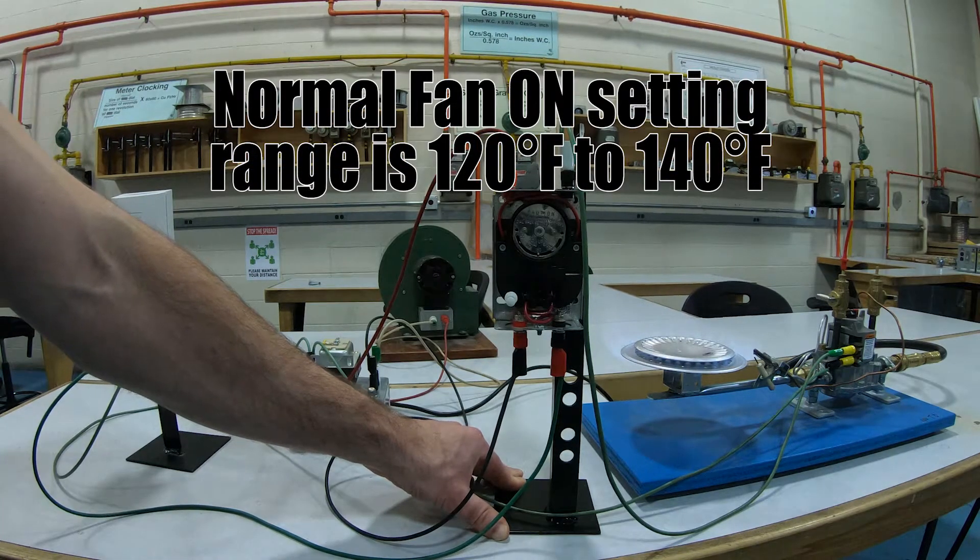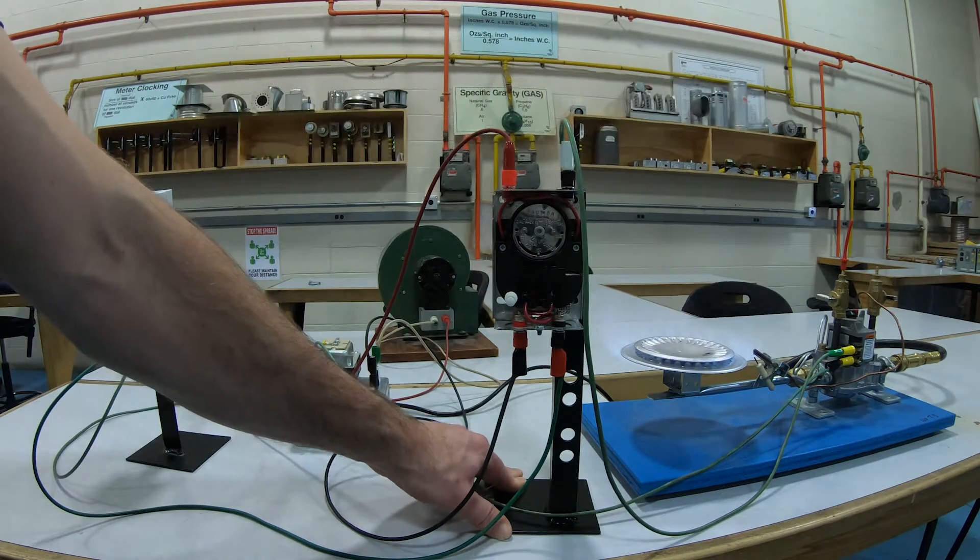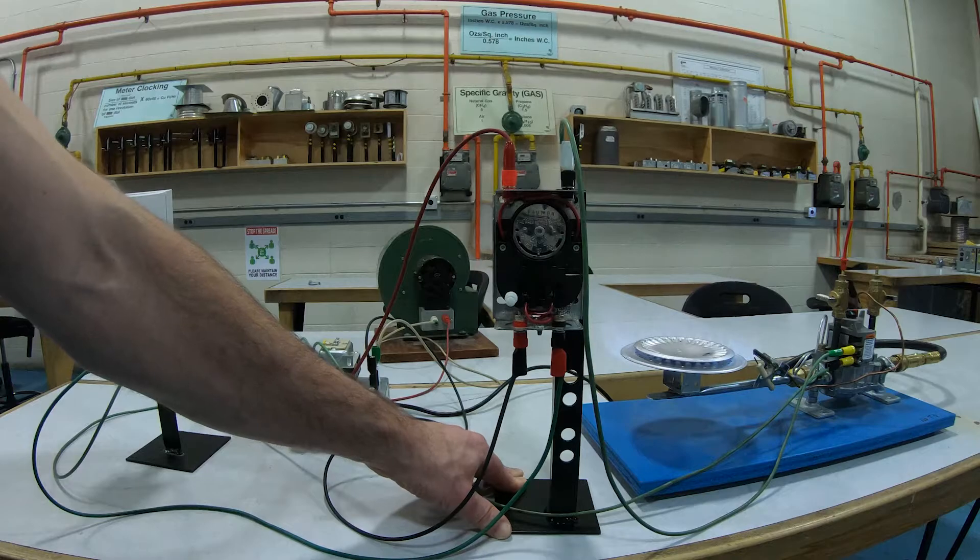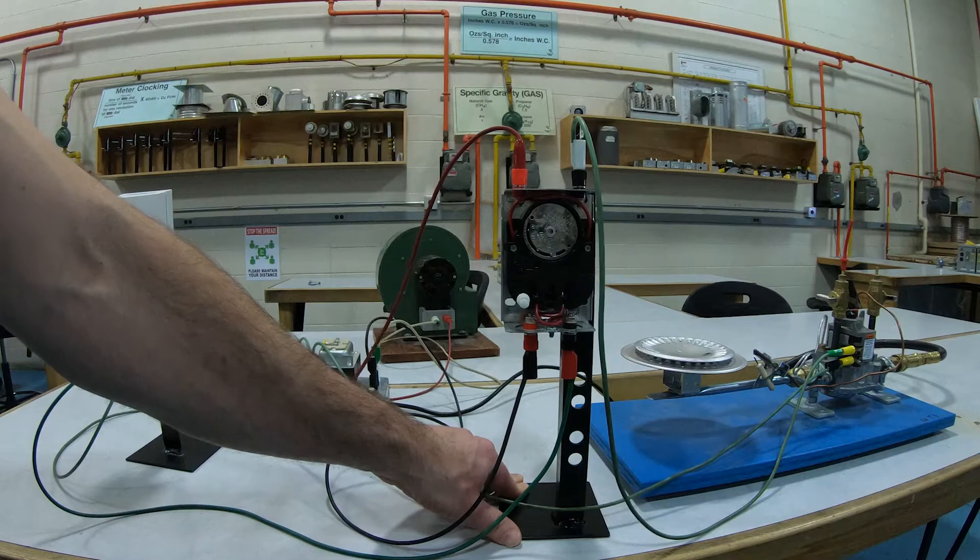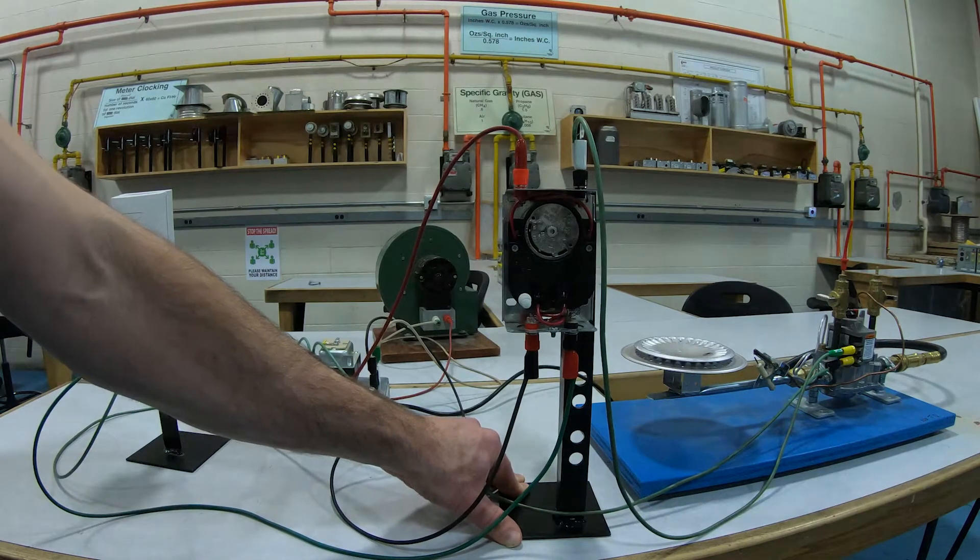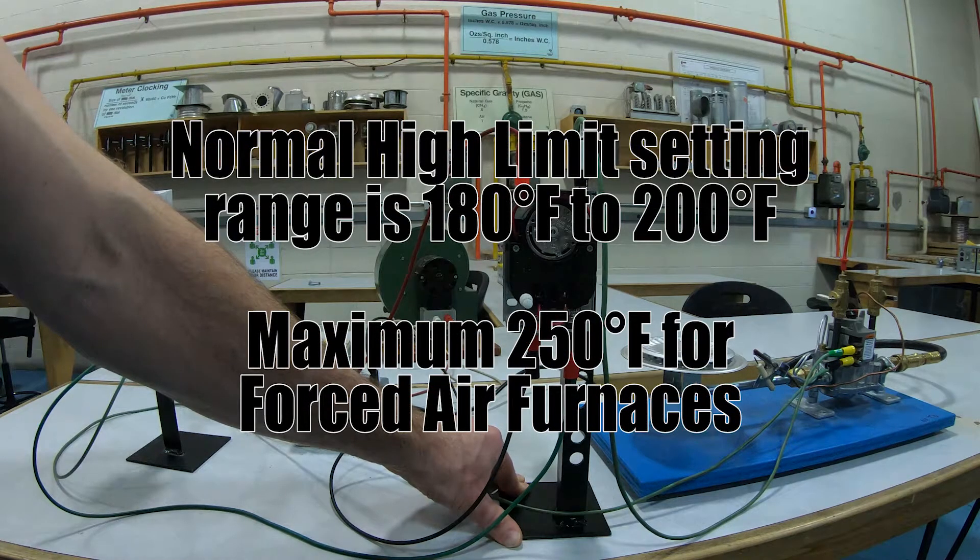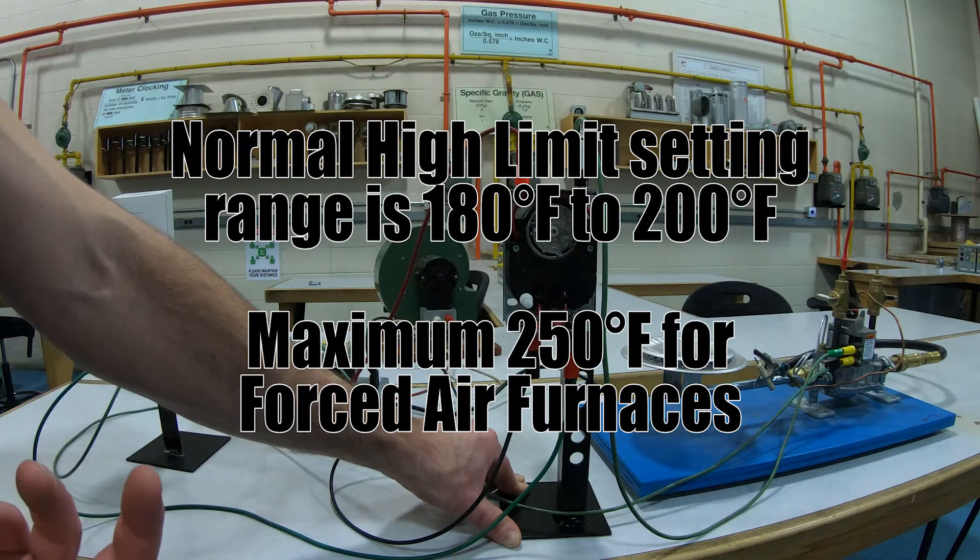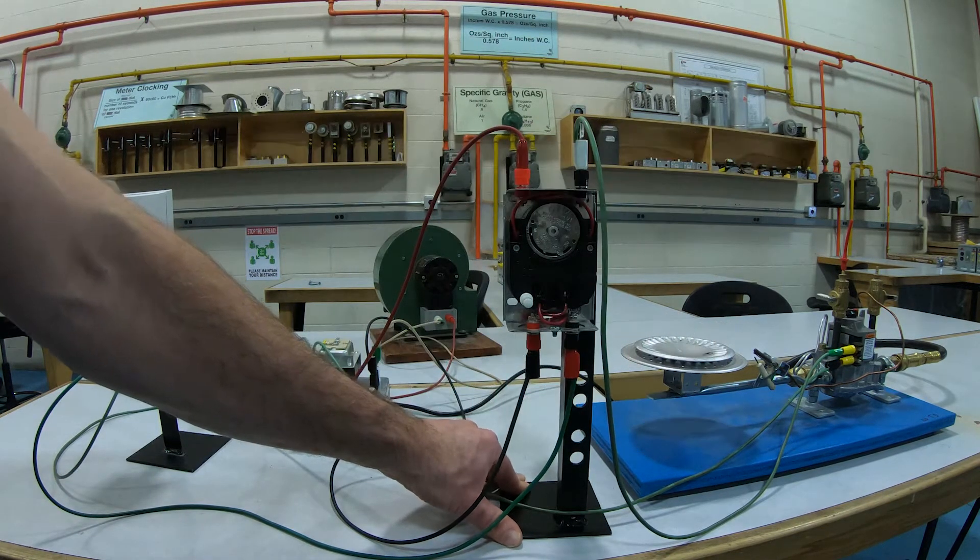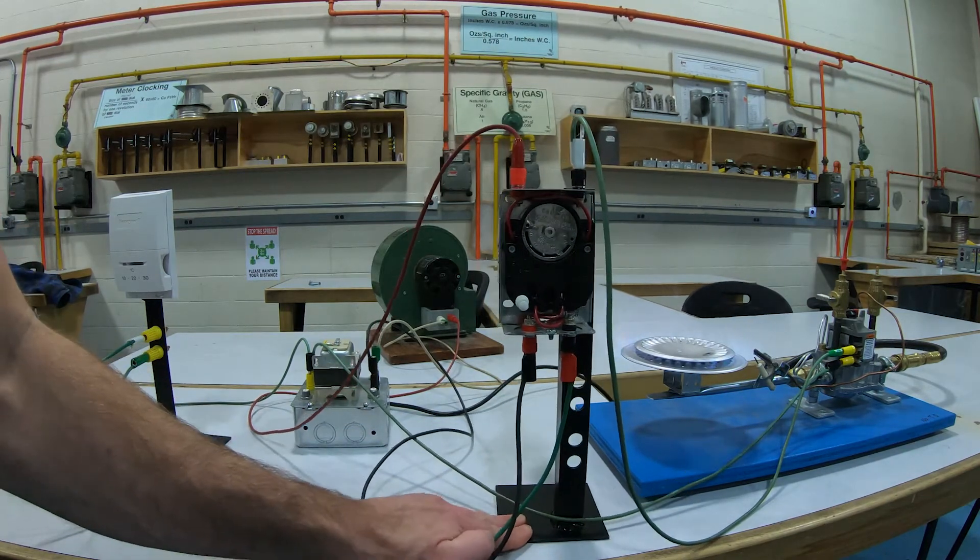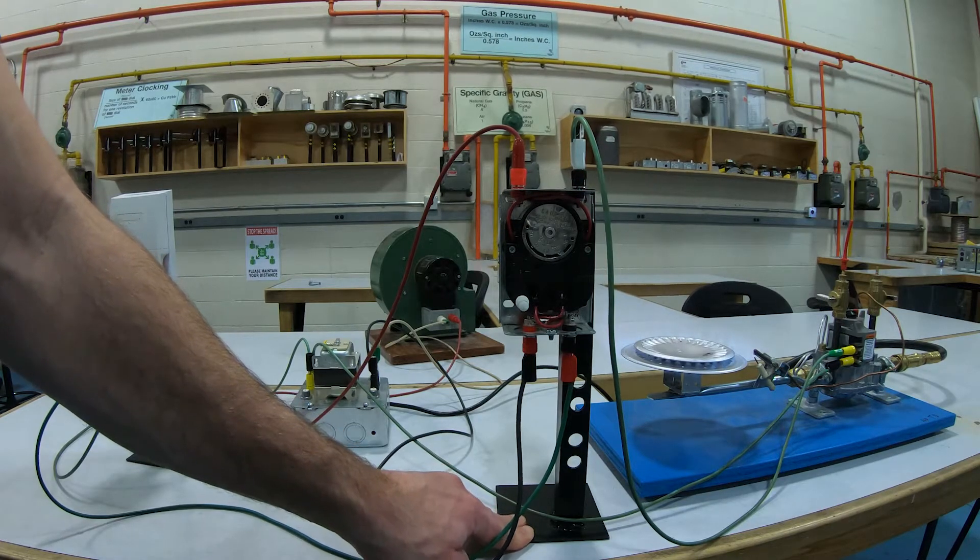Now we're going to simulate a problem. We're going to go into high limit very quickly. Apparently we went into high limit really fast because it was directly exposed to flame. Our high limit setting is at 200 degrees Fahrenheit, but that generally ranges between 200 and 180 degrees Fahrenheit. As you can see there though, we cooled down and the burner came back on.